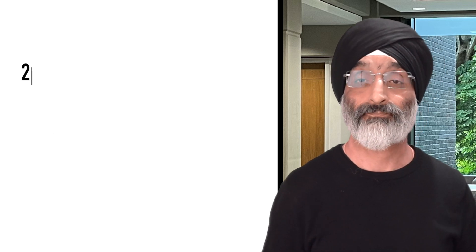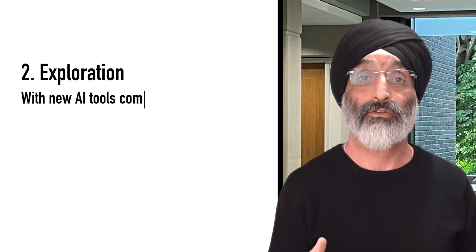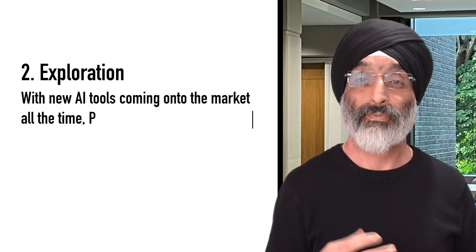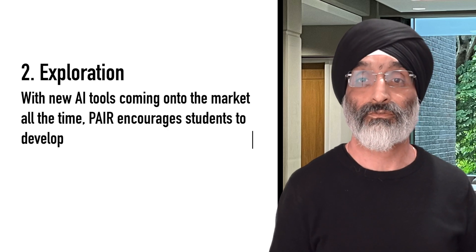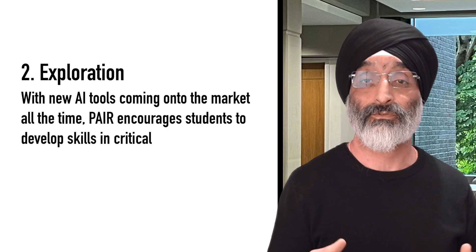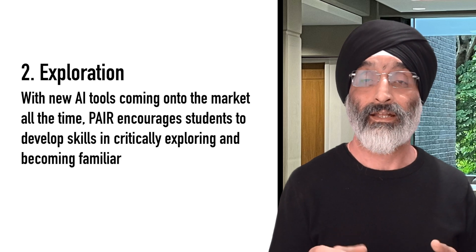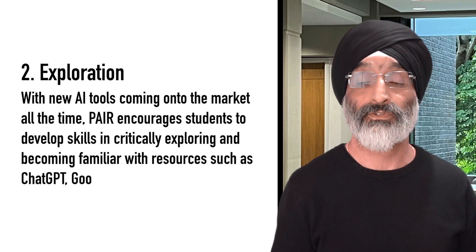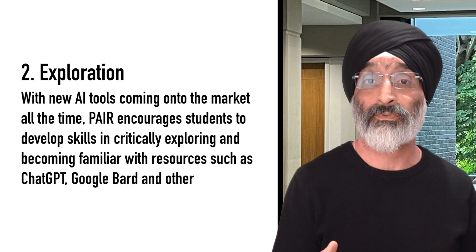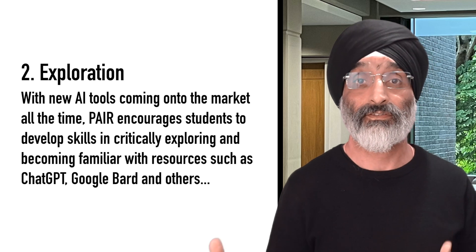The second skill is Exploration. With new AI tools coming onto the market all the time, PEAR is really good at encouraging students to develop skills in critically exploring and becoming familiar with resources such as ChatGPT, Google Bard and others.